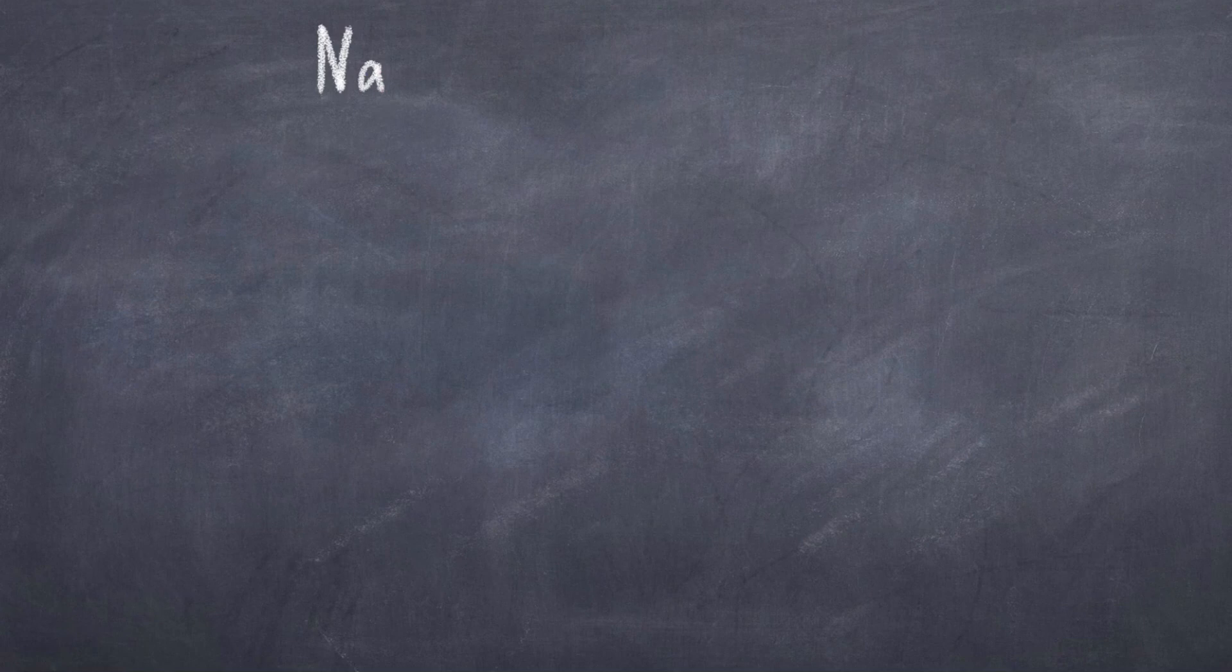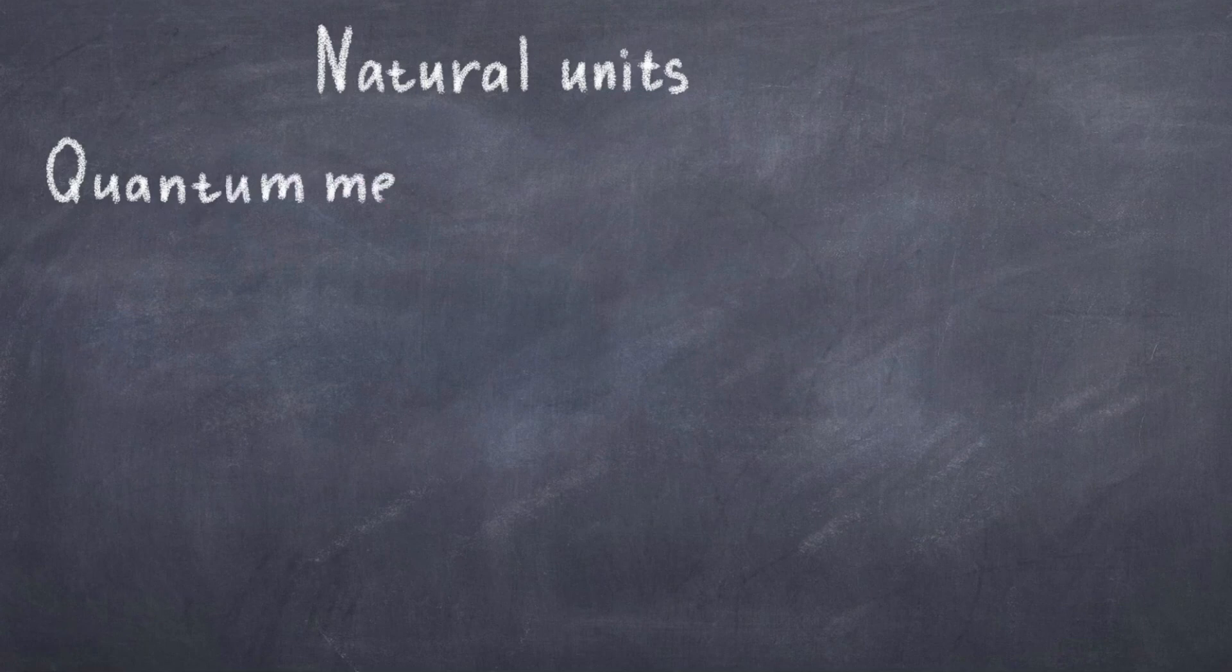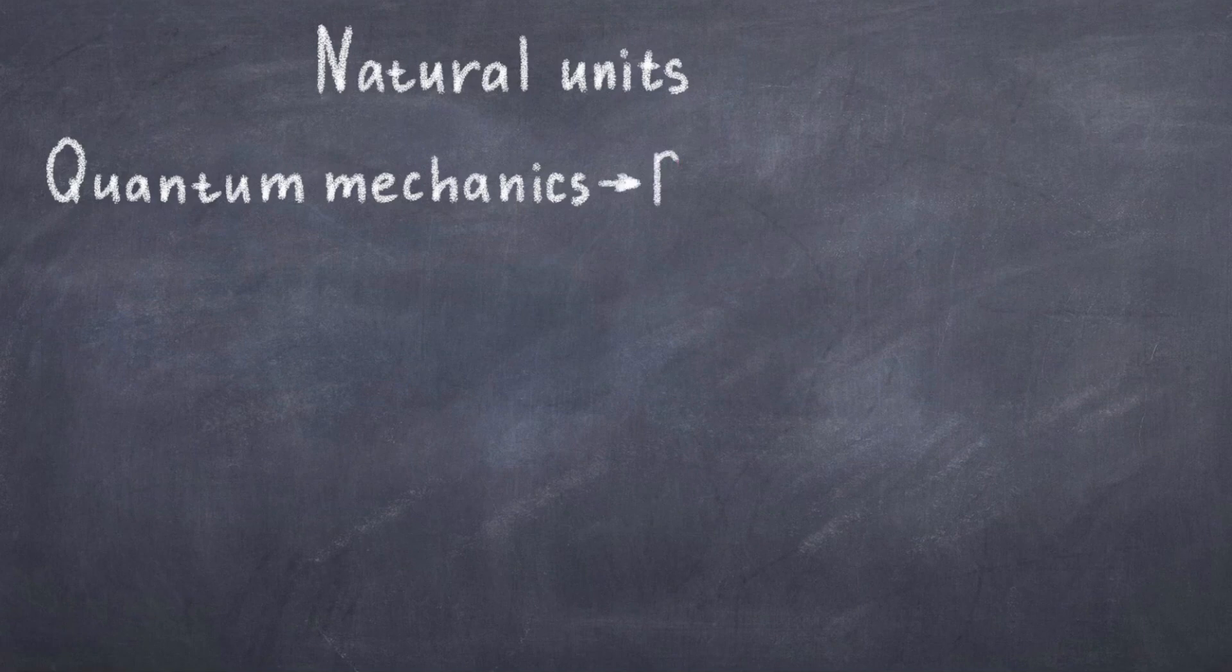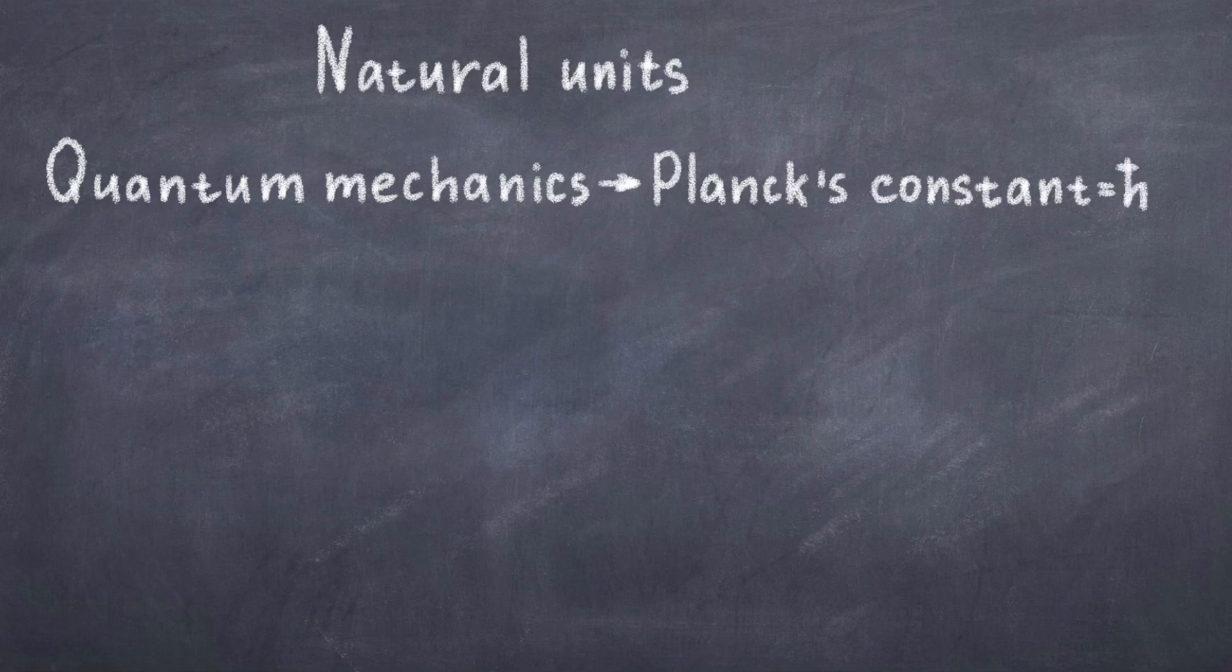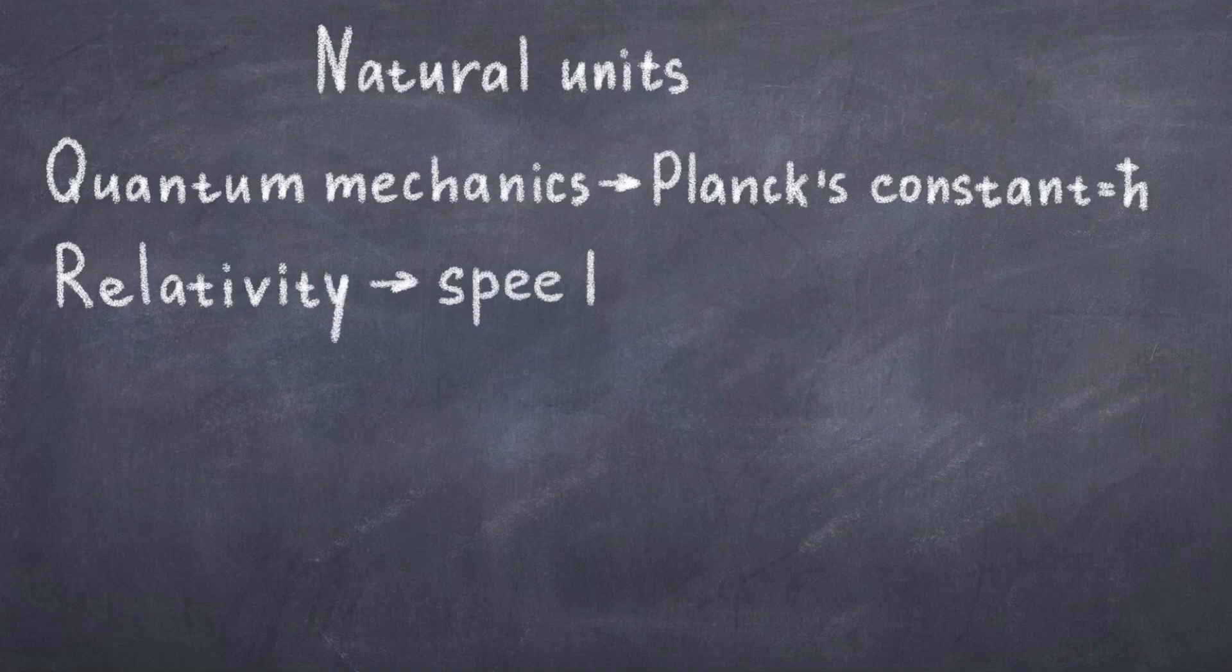Before we go any further, I would like to note that when discussing quantum field theory, we will be using what is called natural units. In quantum mechanics, we got used to seeing Planck's constant h-bar all the time. Likewise, we also encounter the speed of light a lot when discussing the theories of relativity. Since quantum field theory combines special relativity and quantum mechanics, we can expect these constants to be everywhere. To clean up the notation, physicists have come up with natural units, which simply means that h-bar and c is equal to 1, such that we simply do not write these constants.